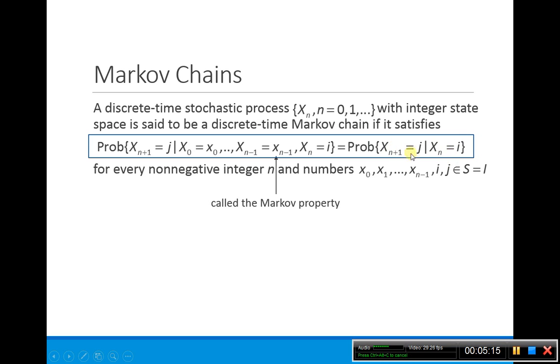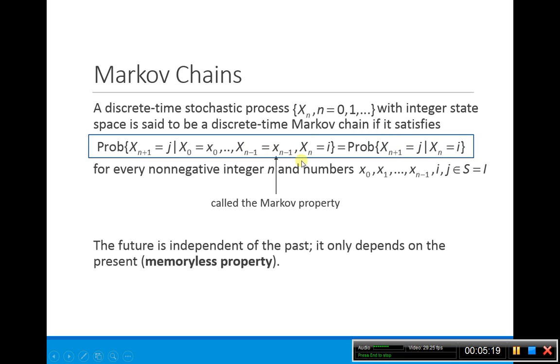Here this is the present time, this is the next time. So what it's basically saying is that you have this memoryless property. What happens in the future, this N plus 1, is independent of the past. It only depends on the present right now, but it does not depend upon your initial value or any of these past properties.